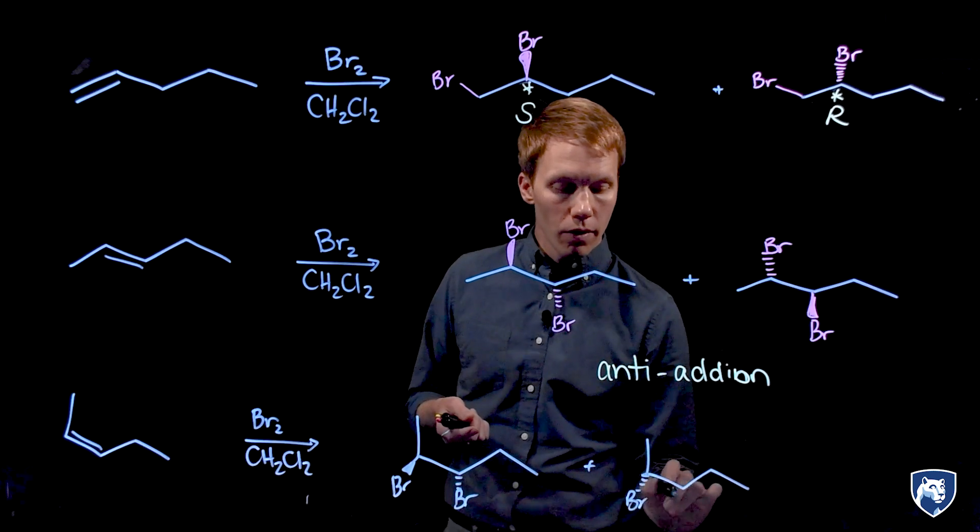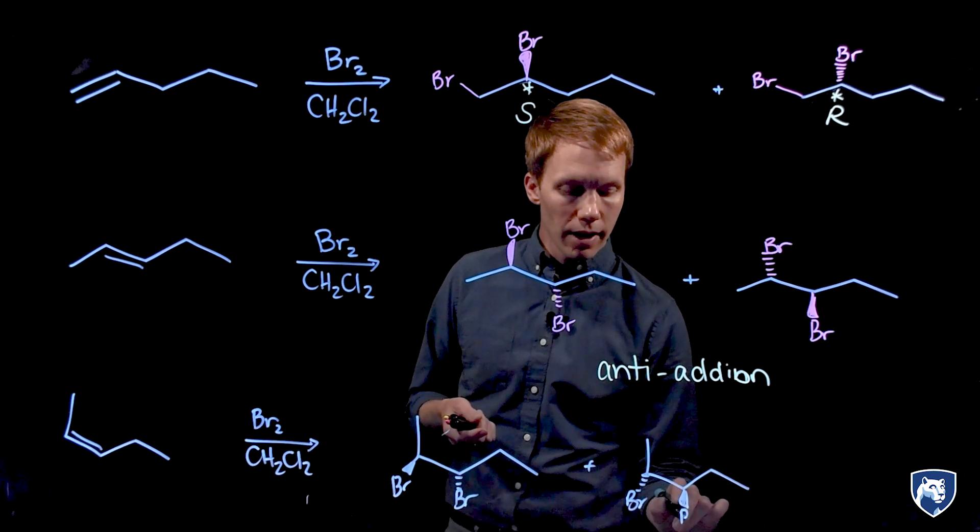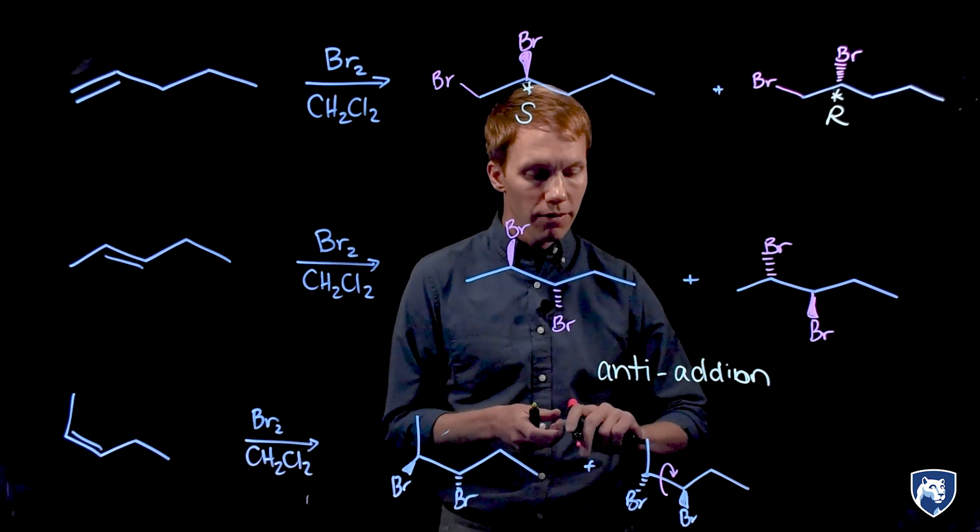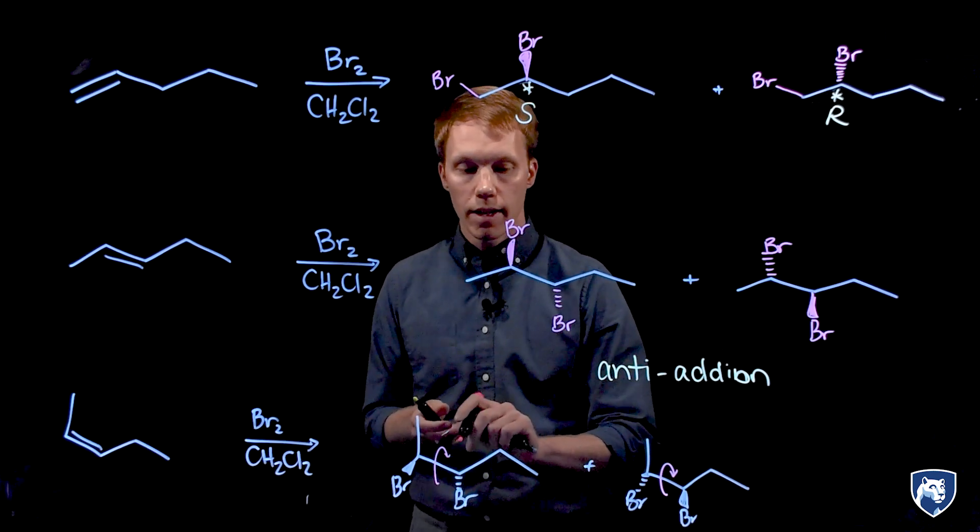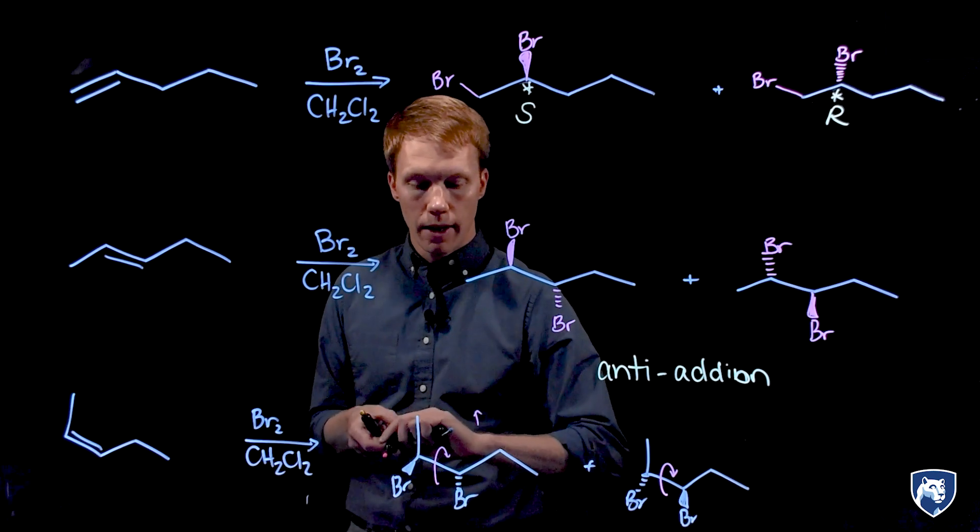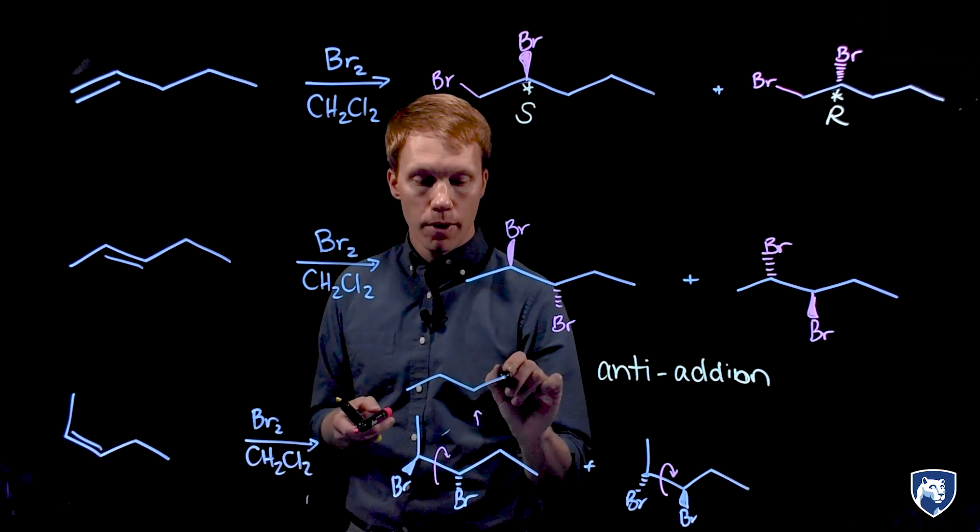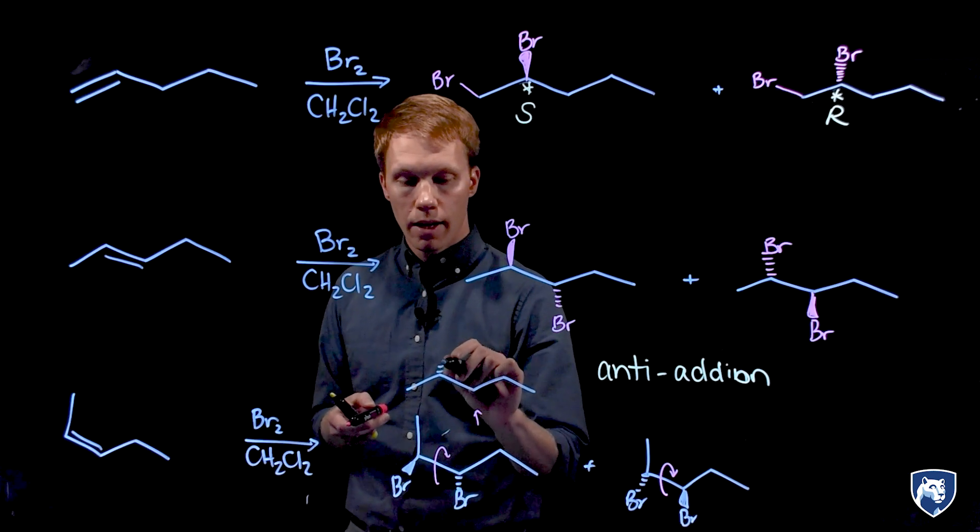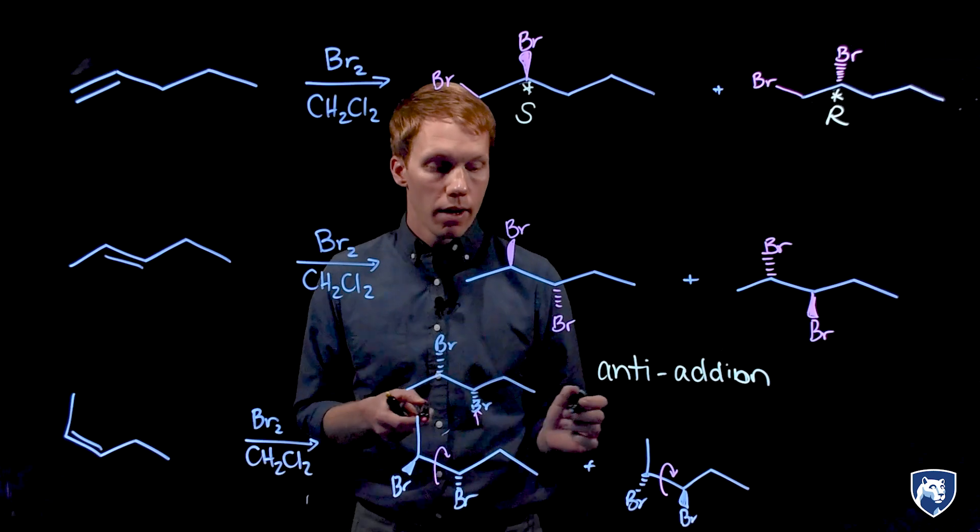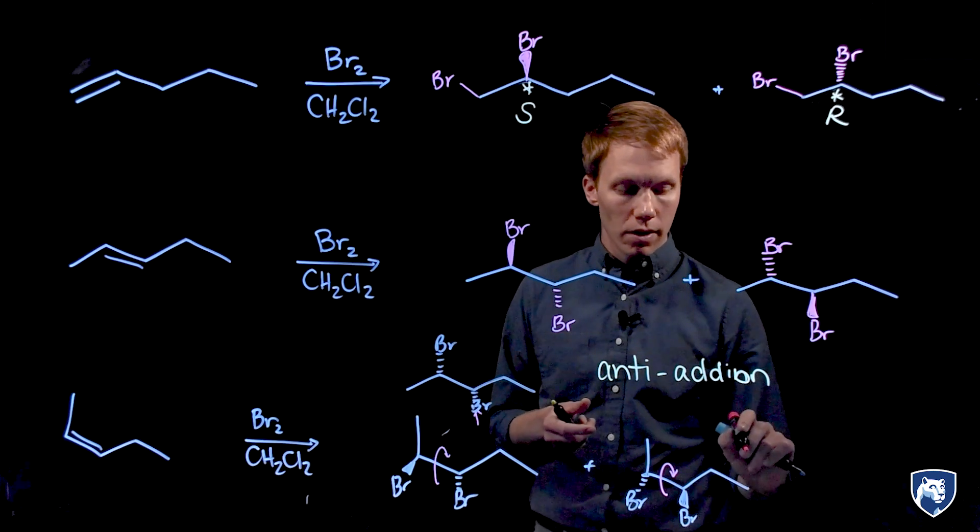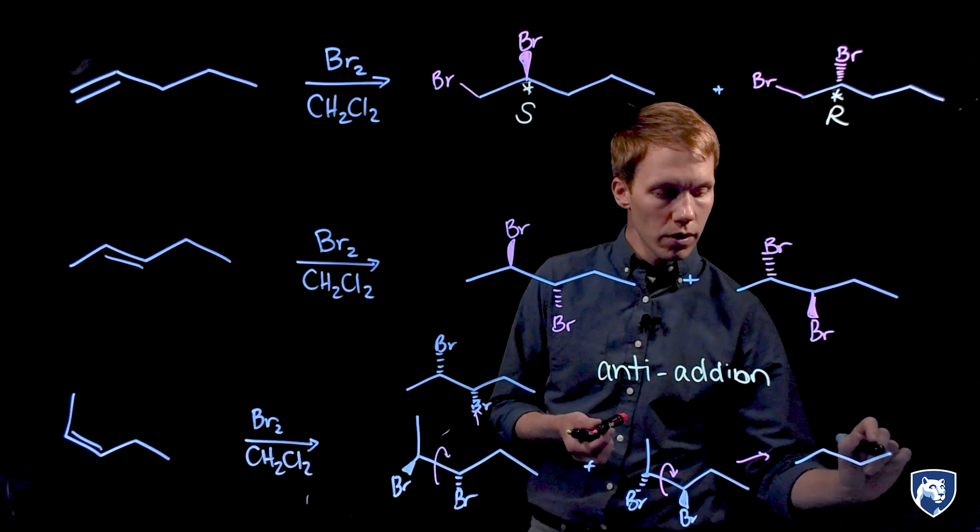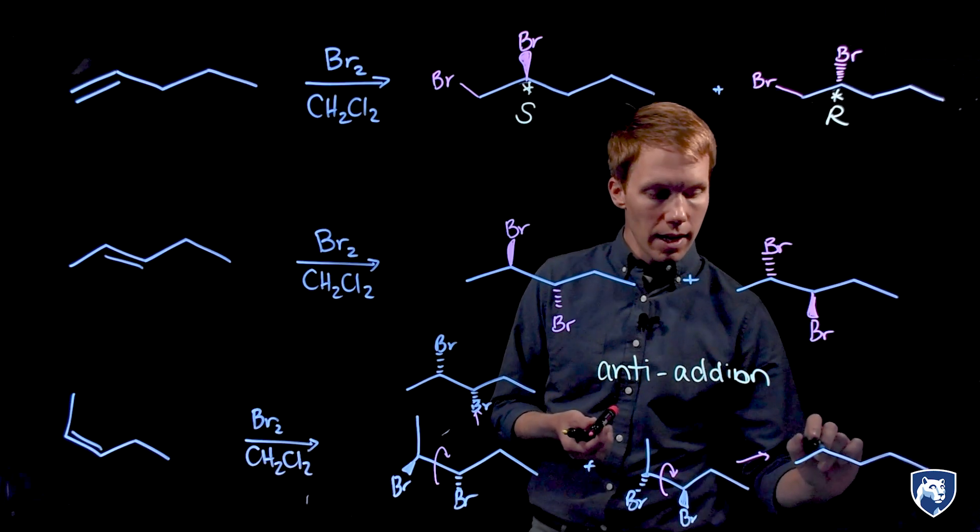And we can rotate about these single bonds to show that these are in fact different from the products obtained with the e-alkene. So let's show the backbone is the same and we produce diastereomers to the products that were produced using the e-alkene.